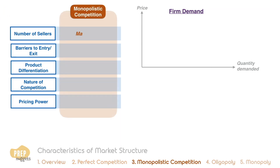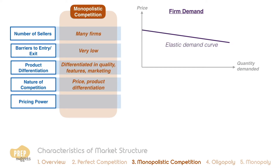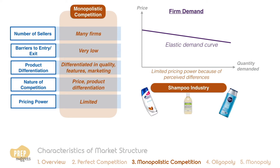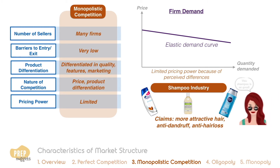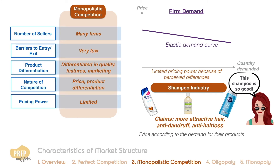Monopolistic competition also has many competing firms and low barriers to entry, but differs from perfect competition in that the products are differentiated. Such differentiation can be in product quality, product features, and marketing. The firms compete not just in price but also in product differentiation. The demand curve faced by each firm is elastic but downward sloping. Firms may have limited pricing power because of perceived differences among competing products. The market for shampoo is a good example: firms differentiate through features and marketing with claims like more attractive hair, anti-dandruff, and anti-hair loss. Because such features can have perceived value for some consumers, shampoo manufacturers are able to price according to the demand for their products — this is why firm demand is downward sloping.